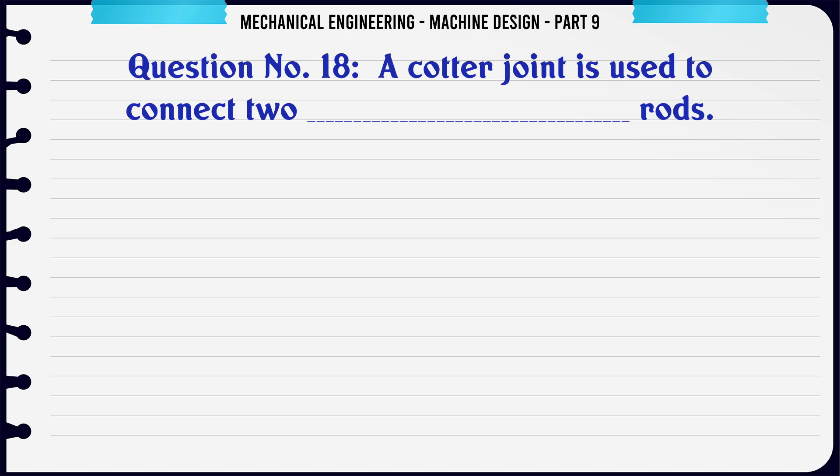A cotter joint is used to connect two rods: A. Coaxial, B. Perpendicular, C. Parallel, D. The correct answer is Coaxial.